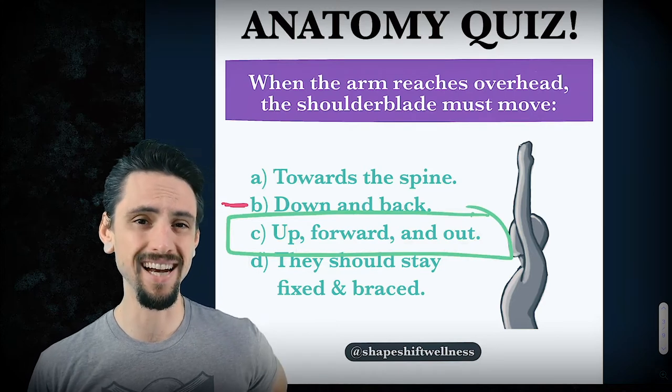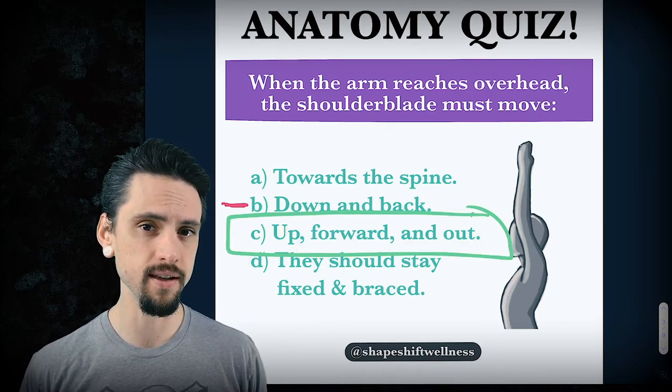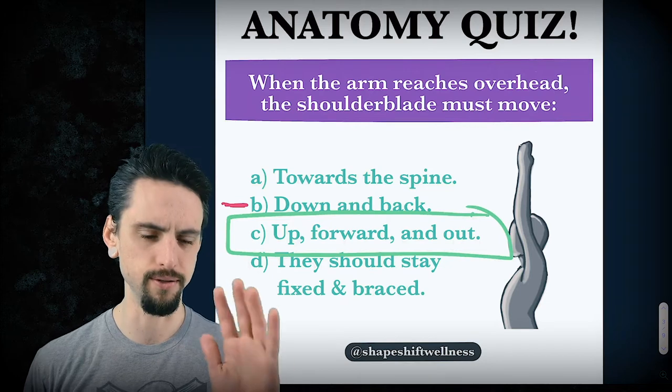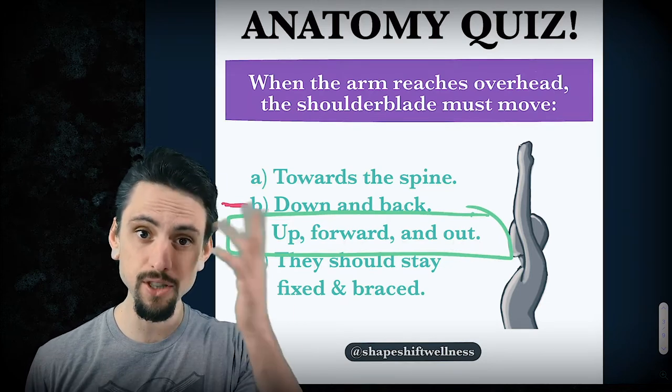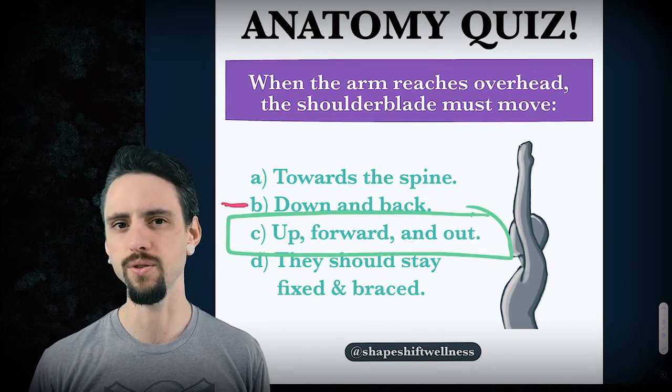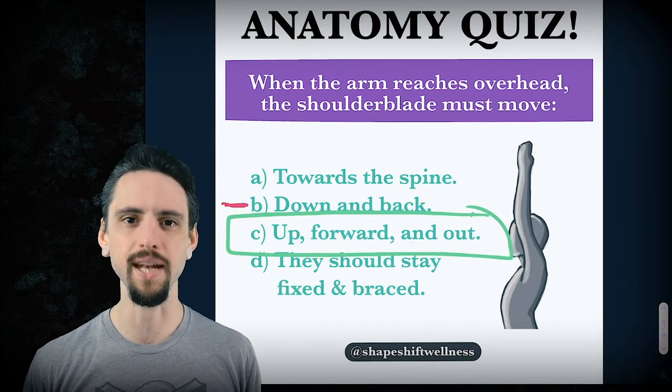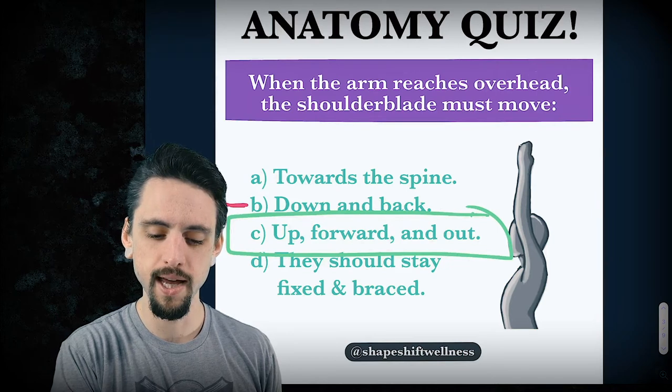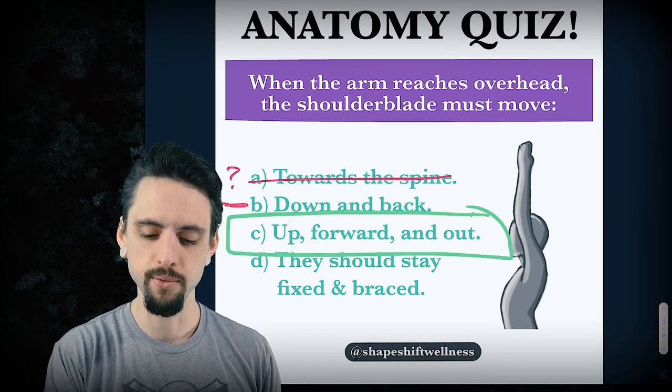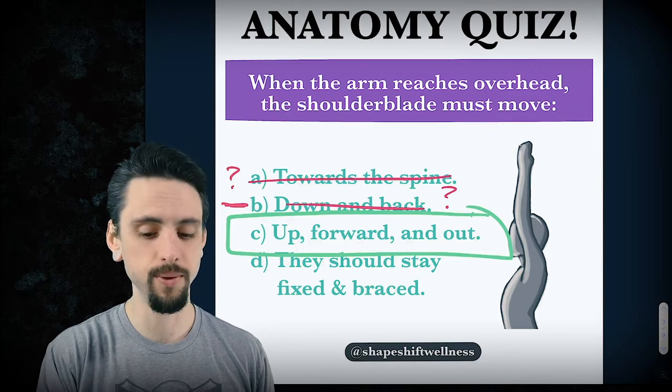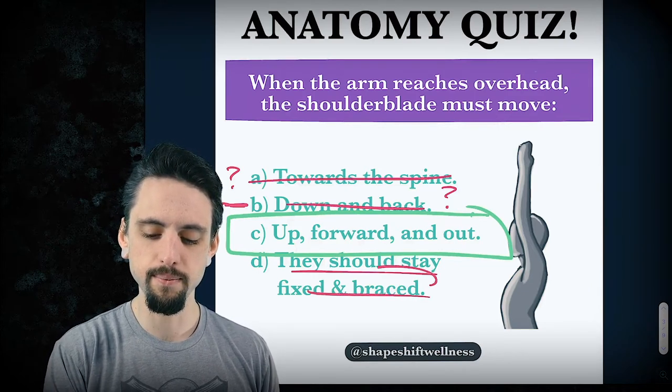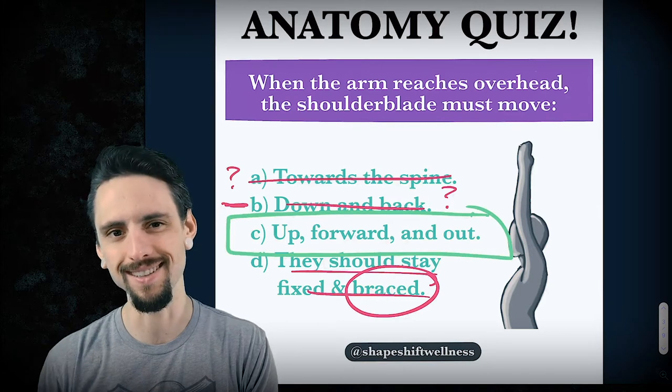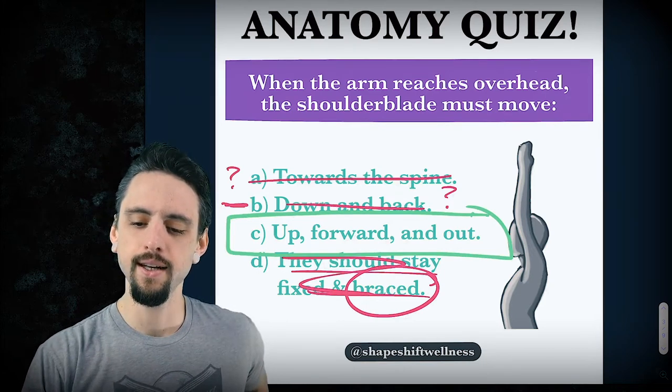I also think that giving anatomical cues is not as important as I used to think. And that giving cues that are external, instead of saying upwardly rotate the scapula, because nobody really knows what that means and it takes you out of your head, maybe we can give cues that indicate reach up like you mean it. That's good enough. Pretty much accomplishes the same thing. So do the scapula move towards the spine? No, they don't. Do they move down and back? No, not when you're reaching overhead. And should they stay fixed and braced? They do some bracing while they're moving. You can move and brace at the same time.